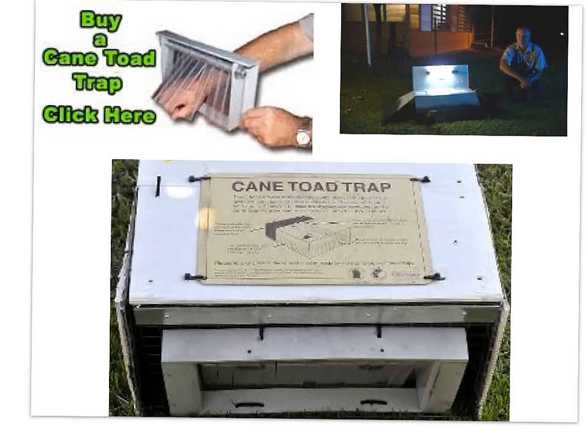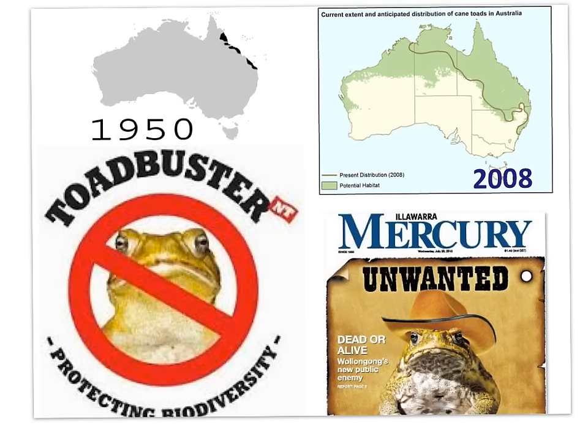Eradication programs cost the Australian government millions of dollars per year. The Pest Animal Control Cooperative Research Center estimated the direct cost of rabbits, another invasive species, at $113 million per year, with some estimates closer to $600 million per year. Homeowners and average citizens are allowed to kill toads, but there are laws against inhumane methods. Ethical questions follow: should we be concerned in killing toads? Is there any real probability of eliminating toads from Australia? Is the money spent to eradicate the toad worth the gain in biodiversity?